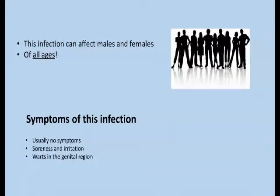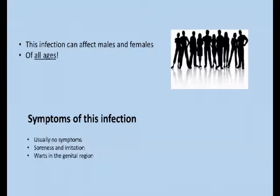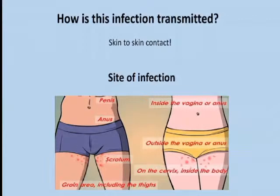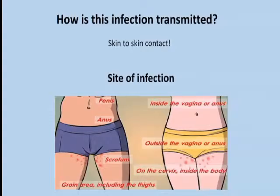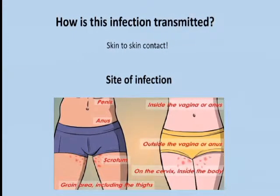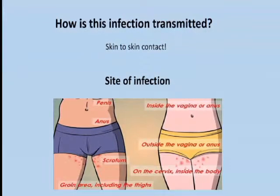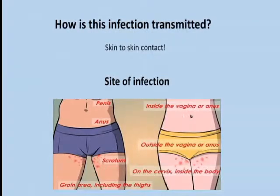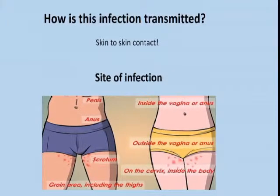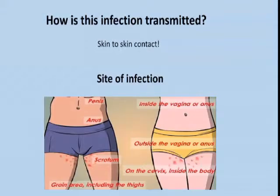With this infection, there are usually no symptoms, just a noticeable lump on the skin. They may cause soreness and irritation, especially if they are present around the anus. The warts can bleed or be painful during intercourse. If the warts are present inside the anus, they can cause bleeding on going to the toilet.